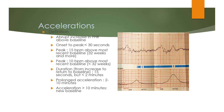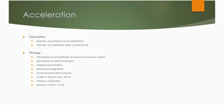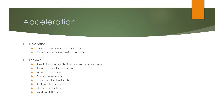Accelerations are defined as an abrupt increase in fetal heart rate above the baseline, with onset to peak of less than 30 seconds. At 32 weeks and beyond, the peak should be 15 beats per minute above the recent baseline, with duration of 15 seconds but less than 2 minutes. Before 32 weeks, the peak is 10 beats above the most recent baseline. Prolonged acceleration lasts 2 to 10 minutes; acceleration of more than 10 minutes is a new baseline. Accelerations may be episodic (spontaneous) or periodic (with contractions).